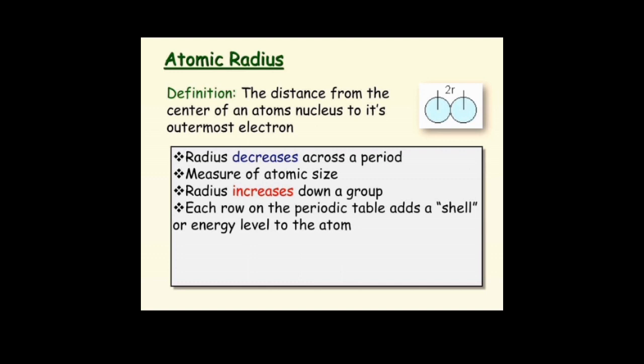Radius decreases across a period. It's a measure of atomic size. Radius increases down a group. Each row on the periodic table adds a shell or energy level to the atom.